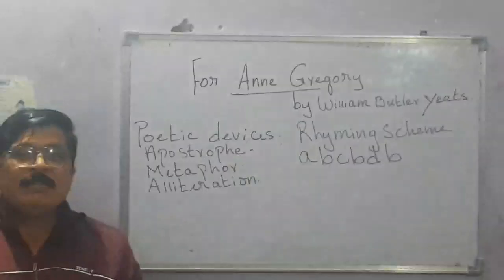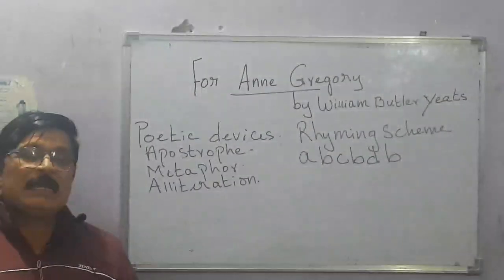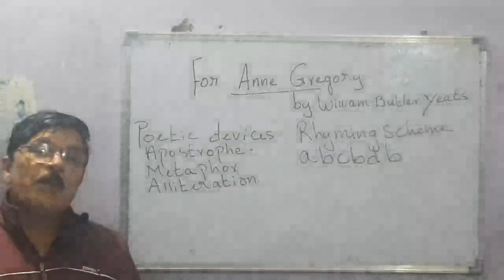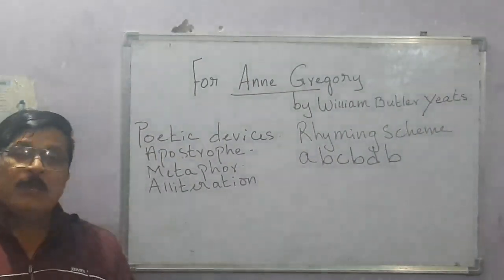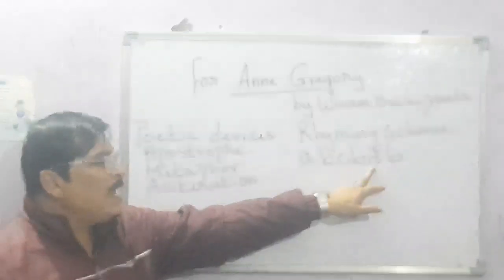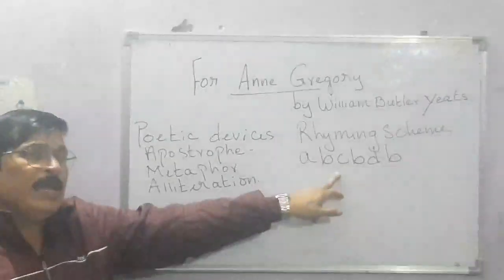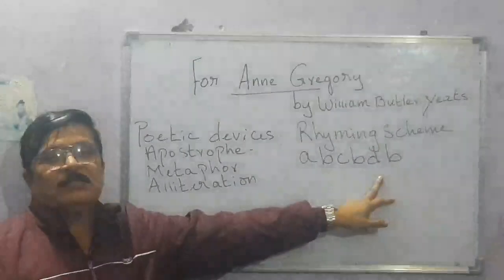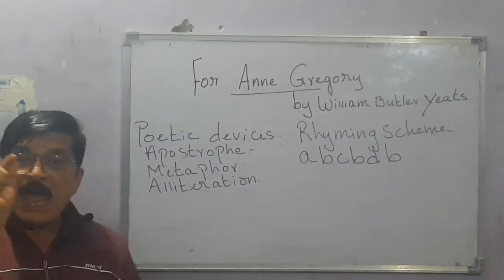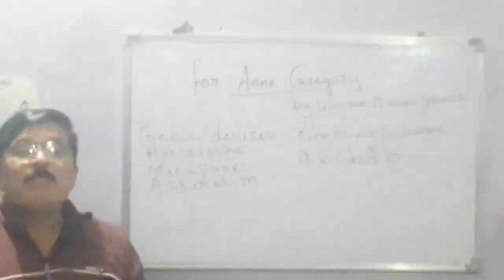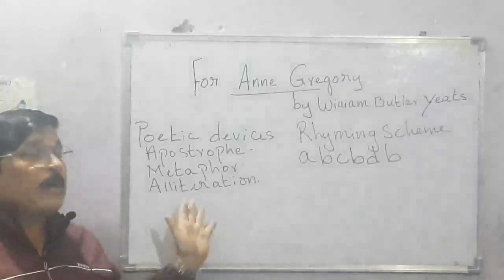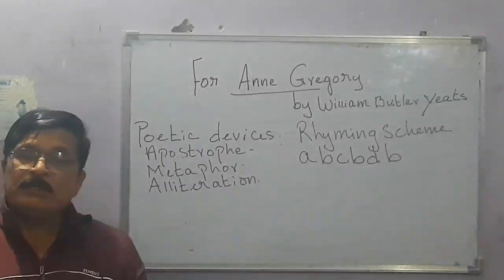The rhyming scheme of the poem is ABCBBB. From this rhyming scheme, there are six alphabets, so each stanza of the poem has six lines. I will also explain to you how to find out the rhyming scheme of a poem.